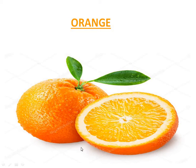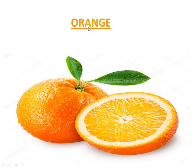Look here children. Which fruit is this? This is an orange. Orange fruit is orange in color. The name of the fruit is also orange, and the color is also orange. It is a rich source of vitamin C. The spelling is O-R-A-N-G-E, orange.